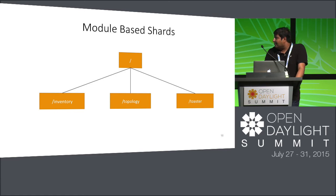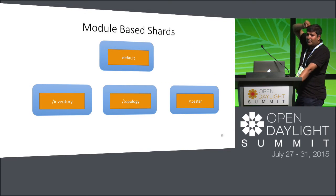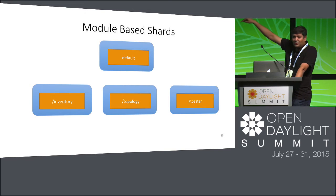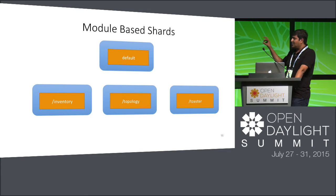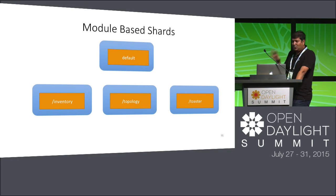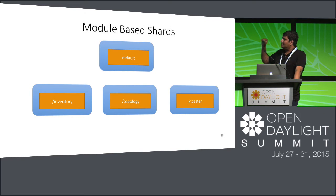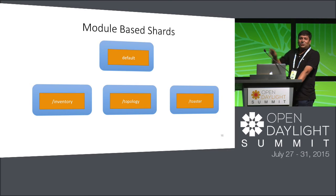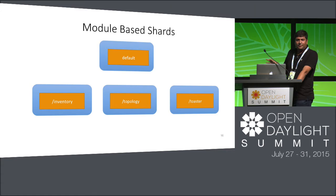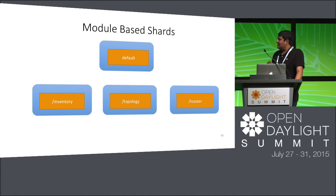We break up the tree at the module level — inventory, topology, and toaster each go into their own shard. What happens to everything else — foobar, my app's data — goes into a default container. If you run the controller and check jconsole, you'll see a shard called either default config or default operational which contains the rest of the data. Today there is no way to say store inventory and topology in the same shard, but that might be a future feature.